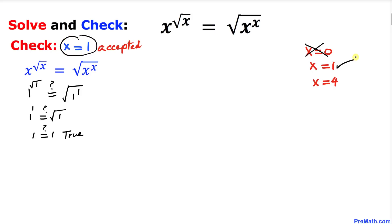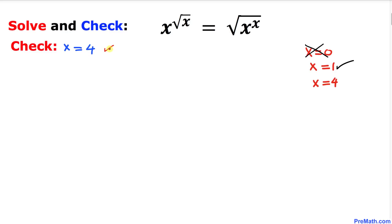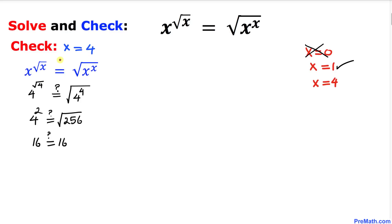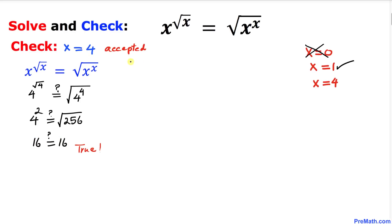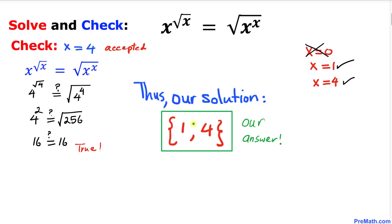Now let's check x equal to 4. Replacing x with 4 in the original equation, the left hand side turns out to be 16 and the right hand side is 16 as well. This statement is true, so we accept x equal to 4. Therefore our solution set is {1, 4}. Thanks for watching and please don't forget to subscribe for more exciting videos!